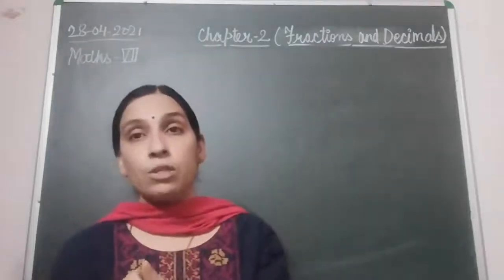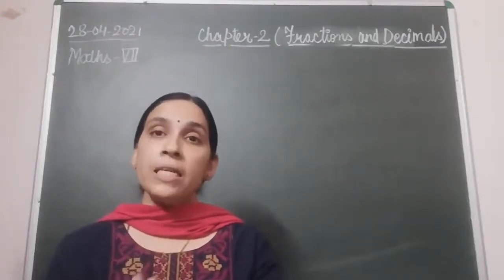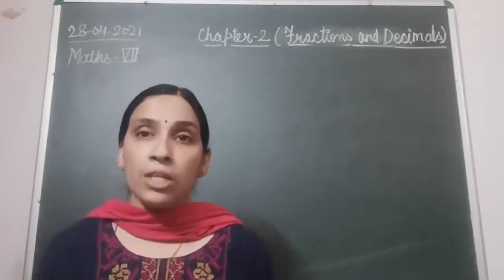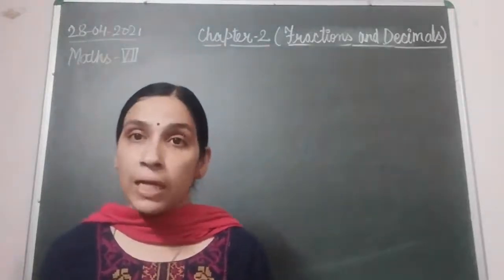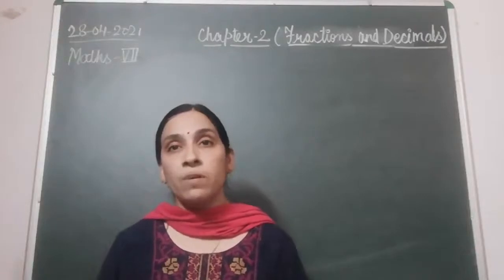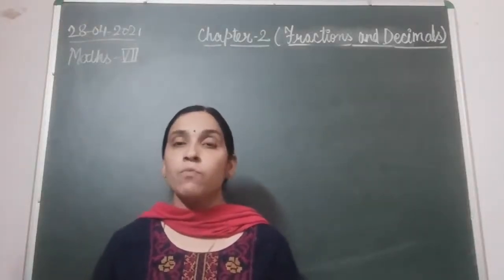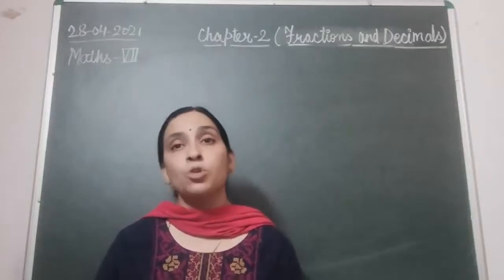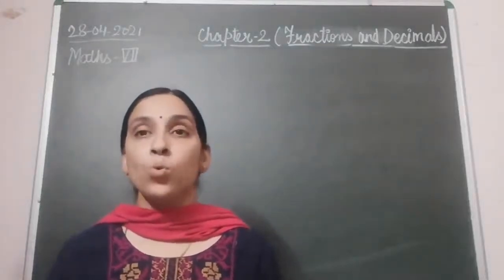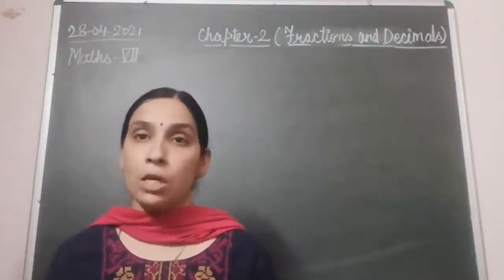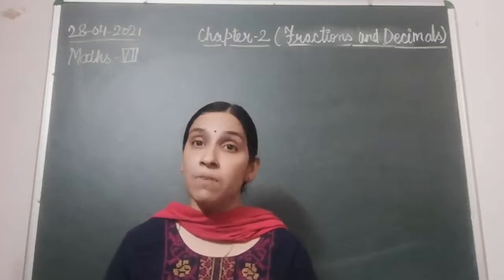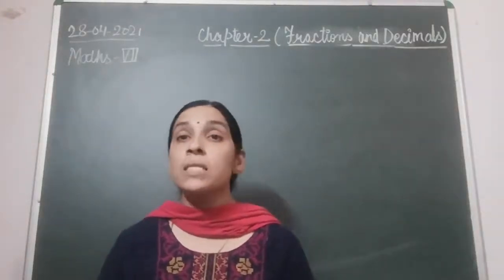Yesterday we did this introduction of fractions, which you have already covered in your lower classes. Now, the different types of fractions: first, like fractions — fractions that have the same denominator, for example 3/5, 4/5, 2/5. Fractions with different denominators are known as unlike fractions.